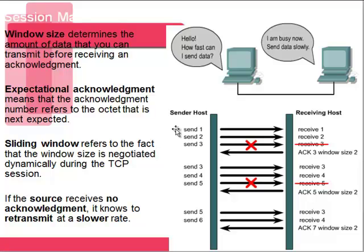In this example, the window size starts at 3. We try to send 3 segments to the receiving host, but only segments 1 and 2 are received. So our acknowledgement sent back is 3 — the expectational acknowledgement, meaning the segment number we expect to receive next. We try sending 1, 2, 3; only 1 and 2 arrive, so the acknowledgement is 3 and the window size drops to 2. We then send 3, 4, and 5; only 3 and 4 make it, so we expect 5 back and the window size stays at 2. It's telling the computer it's sending too fast — lower your window size.